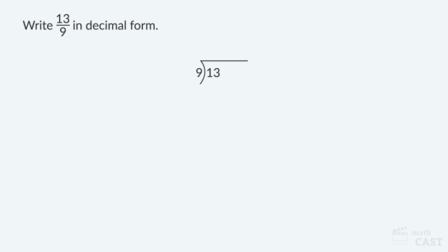So divide 13 by 9. Start by dividing 9 into the first digit of 13. Since 9 doesn't divide into 1, we try dividing 9 into 13. Since 9 divides into 13 one time, we write a 1 in the quotient just above the 3. Subtract the product of 1 and 9 from 13: 13 minus 9 equals 4. 13 can be written as a decimal number with zeros to the right of the decimal point.